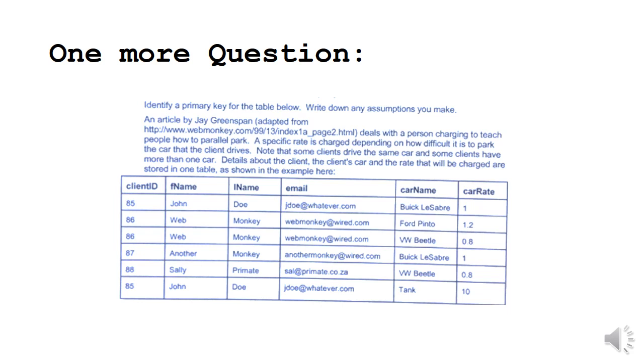Identify a primary key for the table below and write down any assumptions you make. So this table deals with a person charging to teach people how to parallel park. I know this is a topic that all your matrics are very concerned with. So a specific rate is charged depending on how difficult it is to park the car that the client drives. Note that some clients drive the same car and some clients have more than one car. Details about the client, the client's car and the rate that will be charged are stored in one table as shown in the example here. So your job is to find the primary key. And I will tell you in the next lecture what the answer was.